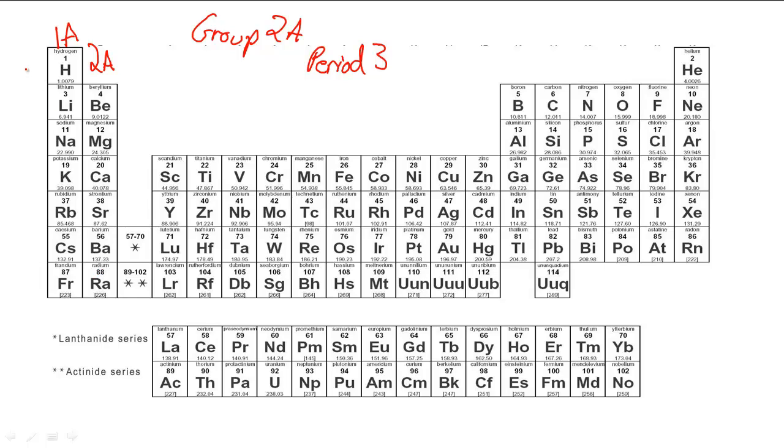Period 3 is 1, 2, 3 - the third row. Don't be confused: even if there's not an element here, this still counts as being in the second period or second row of the periodic table. We have to count the hydrogen-helium row and then go on to 2 and 3.